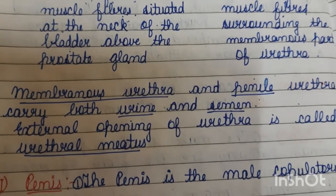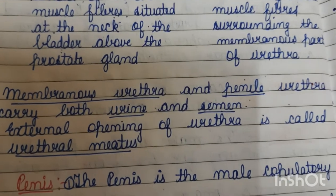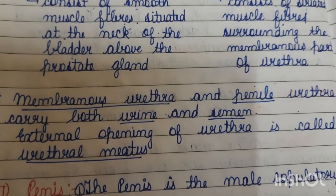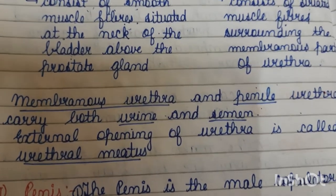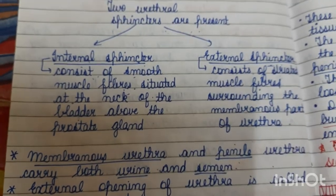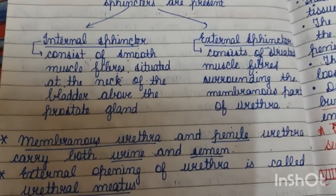The external opening of the urethra is called the urethral meatus. That was all about the urethra of the male.